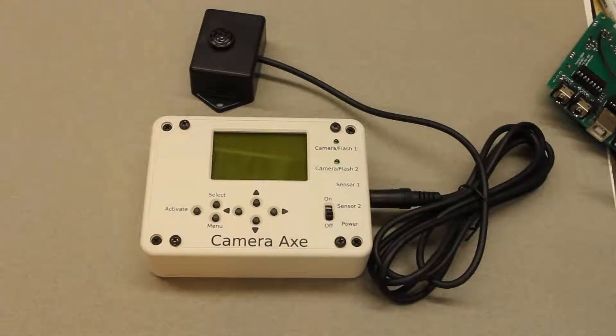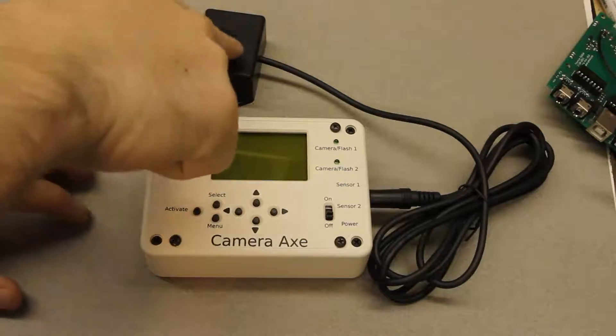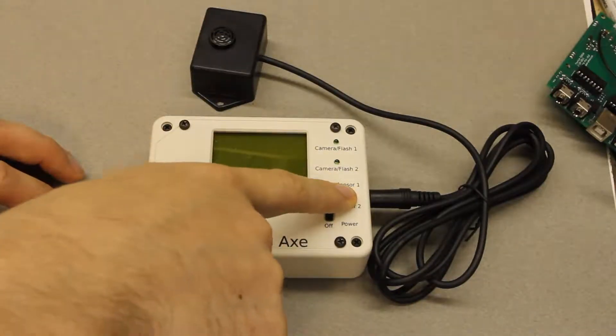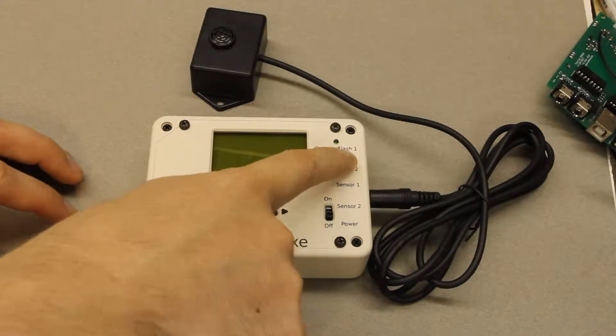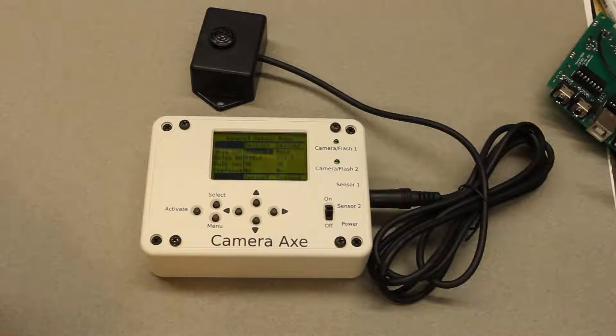So now I'm going to show how to set up the CameraX with the motion or distance sensor. We have the distance sensor plugged into sensor port number one and you would have either a camera or a flash plugged into camera flash port number one. Holding down the activate button while turning it on just to reset the CameraX to defaults.